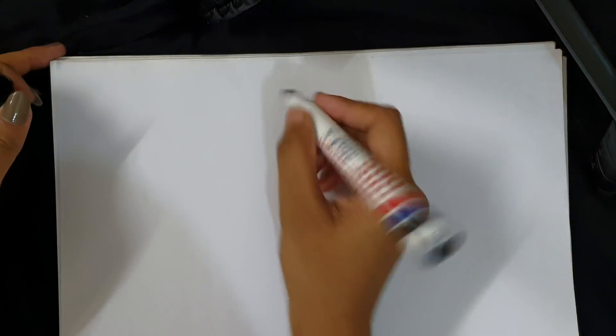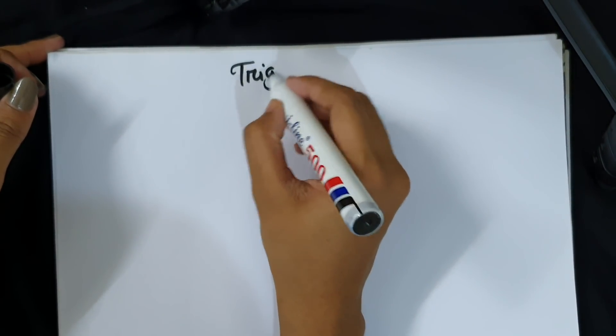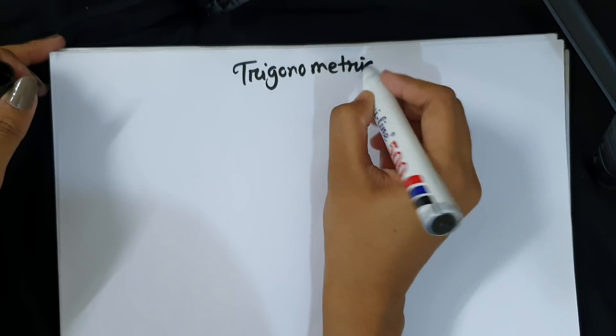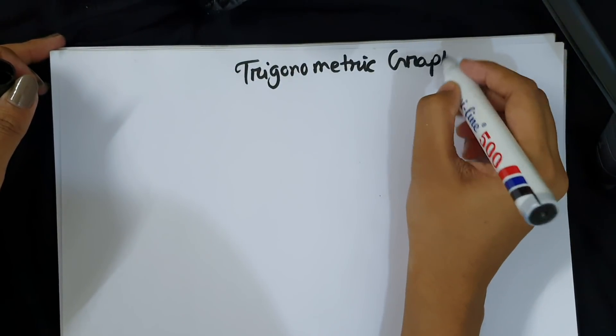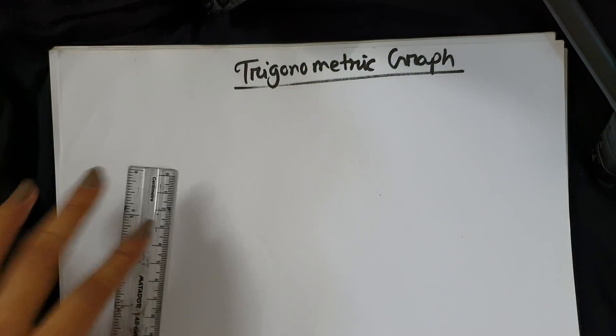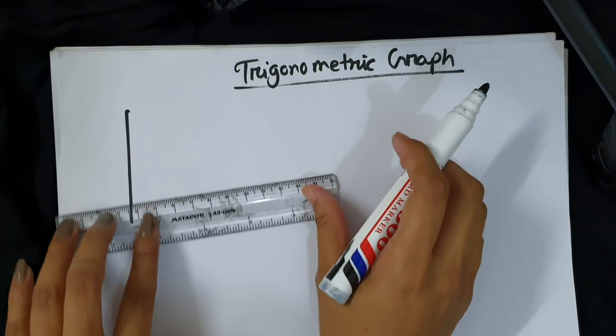We have e to the power x and 2 to the power x. Now I have basic trigonometric graphs — sine and cosine. The trigonometric graph is our first step and we will start with sin x, which is the basic graph.